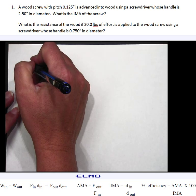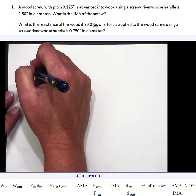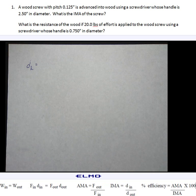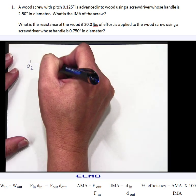Alright so our distance of our resistance is told to us first. It says a wood screw with a pitch of 0.125 inches. So we talked about in the PowerPoint that your distance of your resistance is your pitch. I know we also talked about it's usually given in threads per inch and then you have to put a 1 over that number, but in this problem it just gives us the pitch so we don't have to do that first part. So that is 0.125 inches.